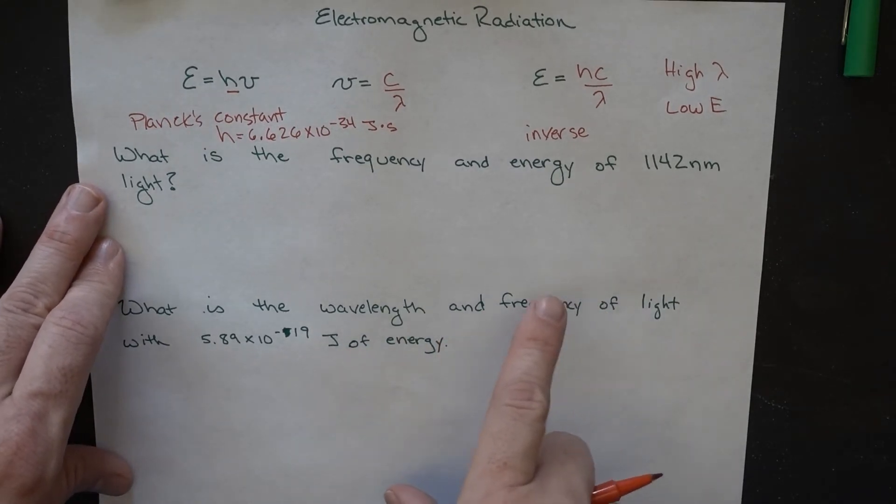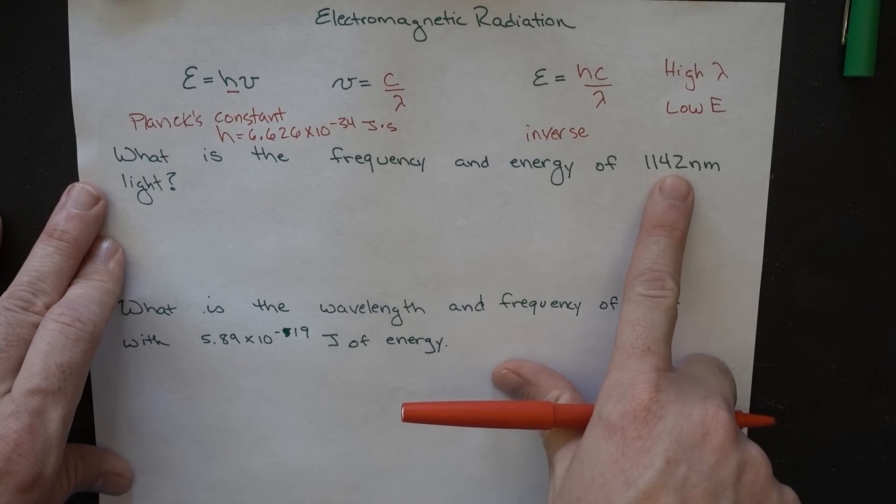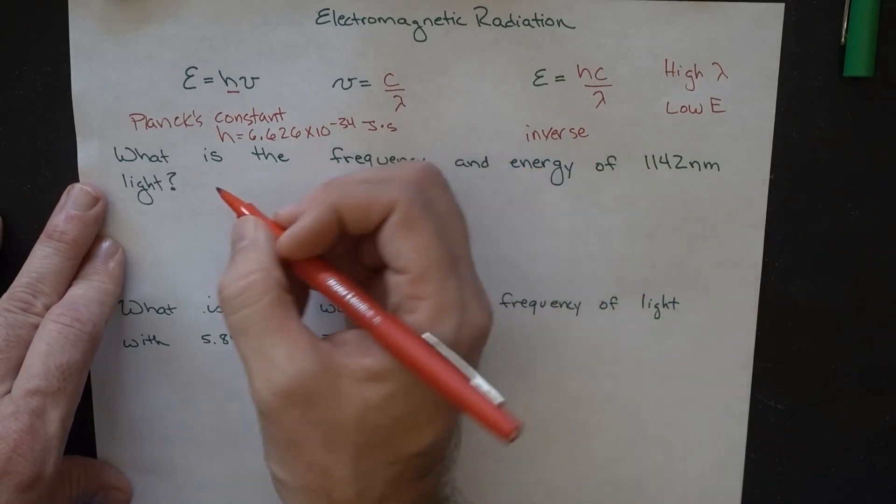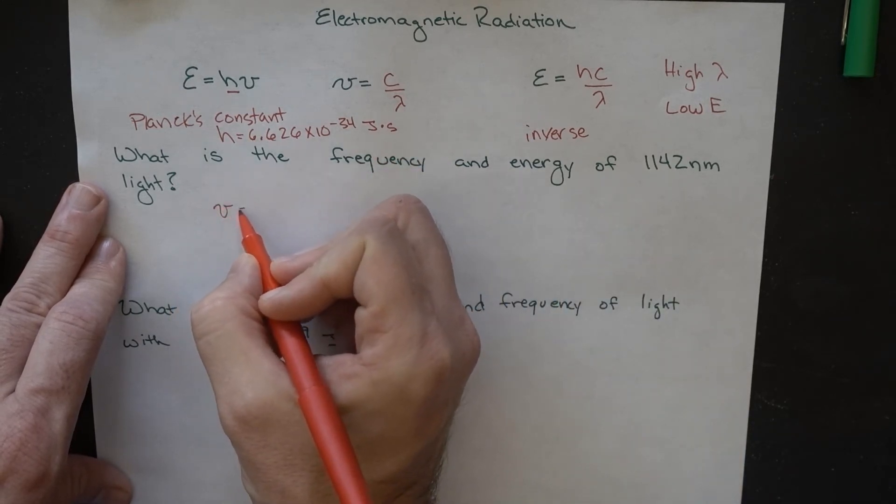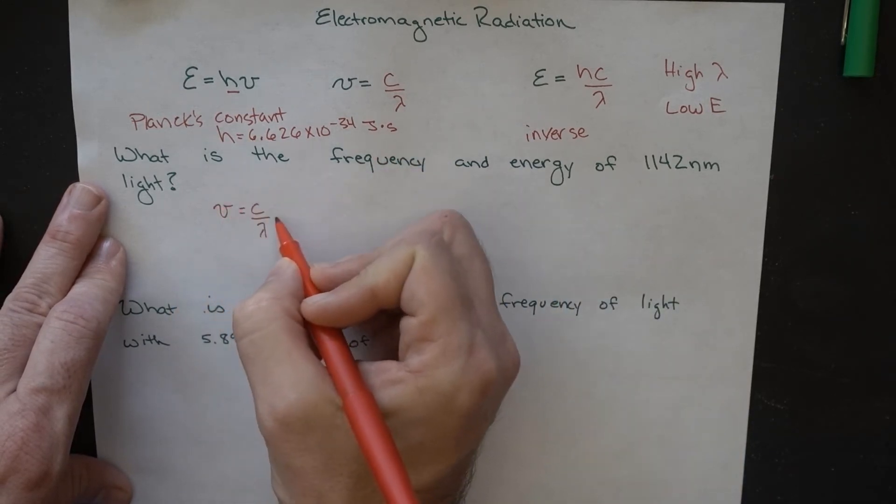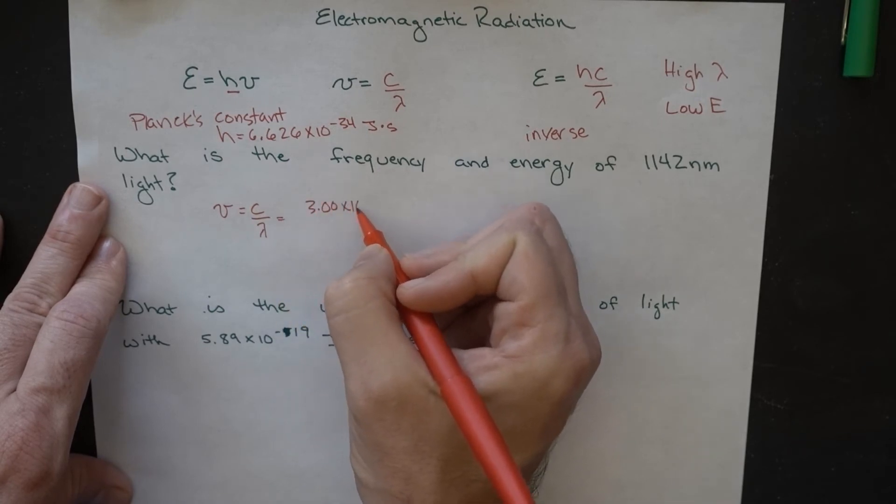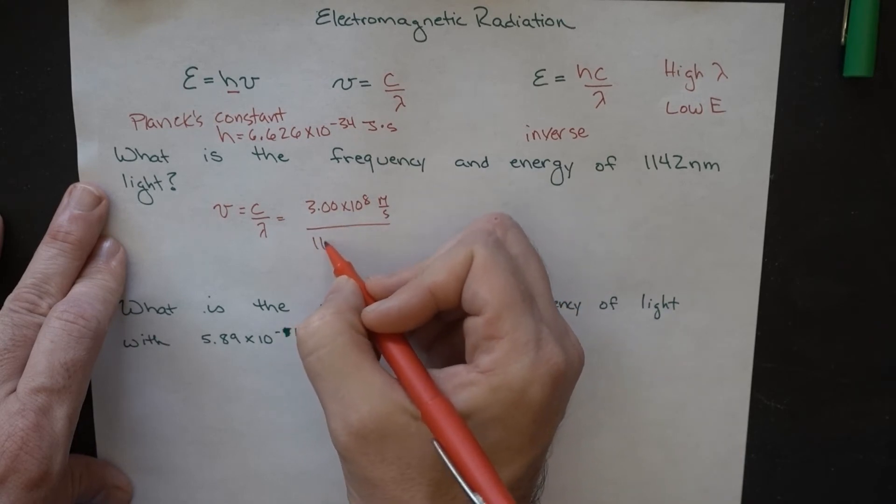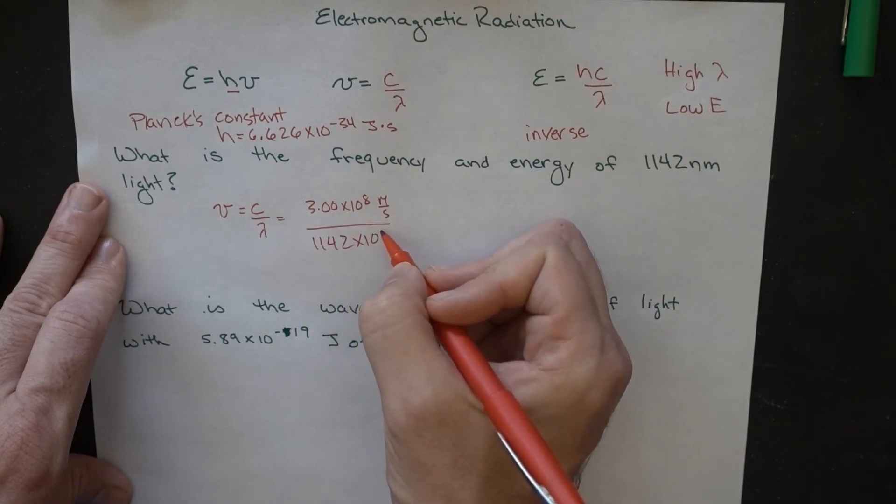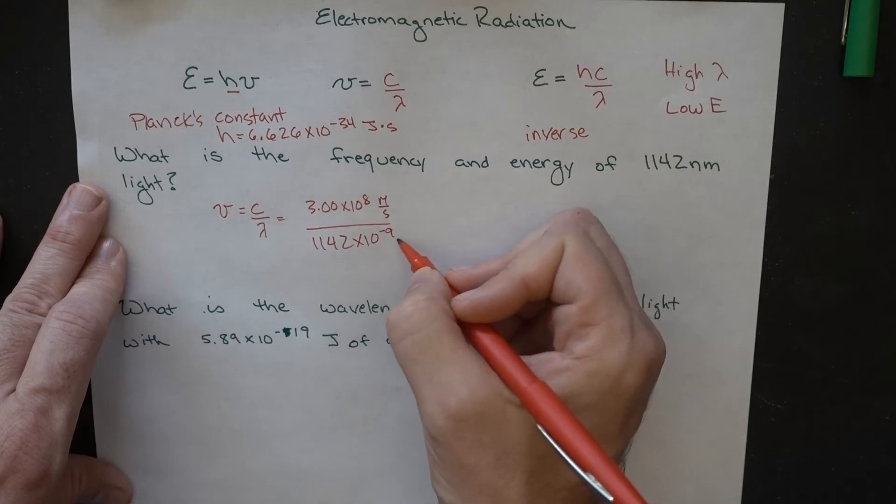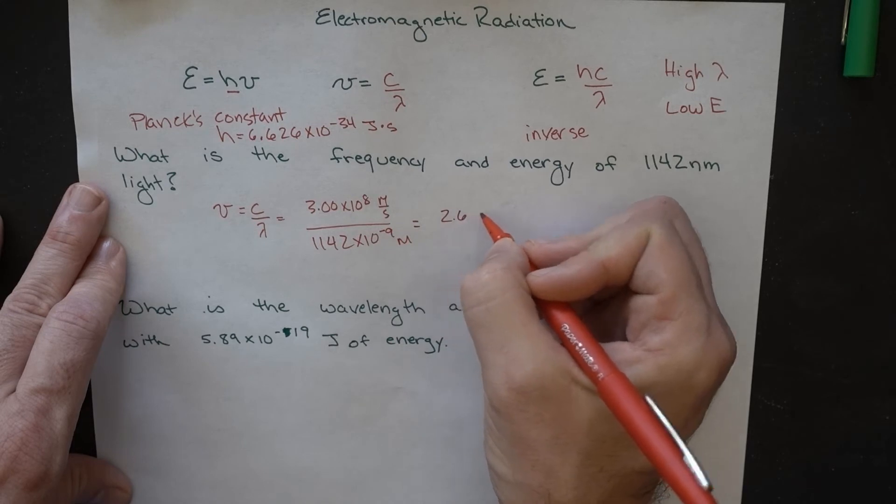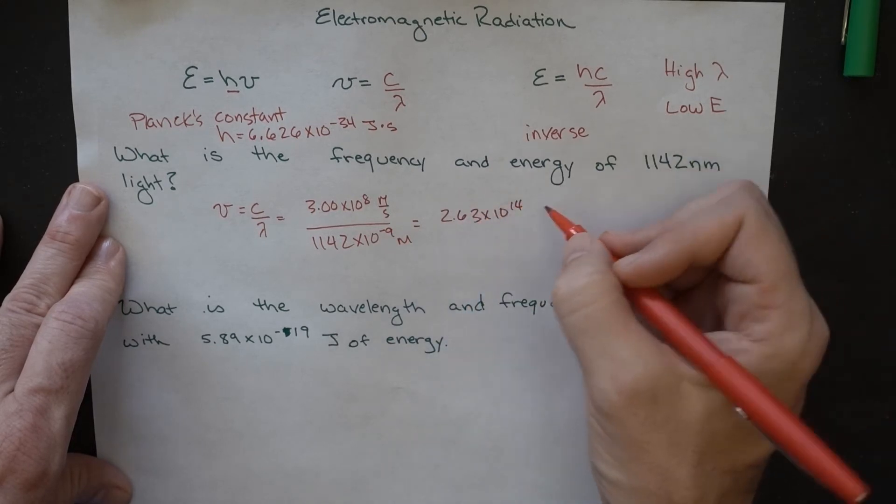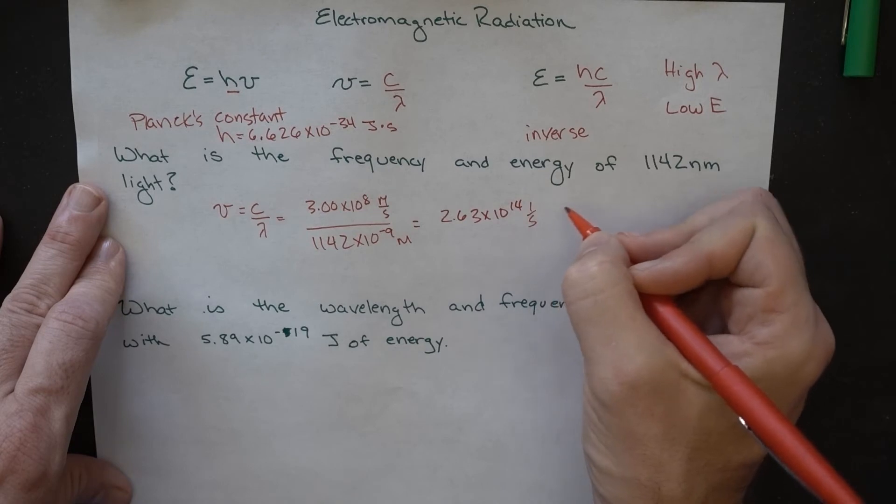What is the frequency and energy of light with this wavelength, 1142 nanometers? The way we can set this up, we can solve either one of these first. Let's do frequency. Frequency is equal to C over lambda, 3.00 times 10 to the 8th meters per second over 1142 times 10 to the negative 9 meters. And that comes out to 2.63 times 10 to the 14th, reciprocal seconds or hertz.